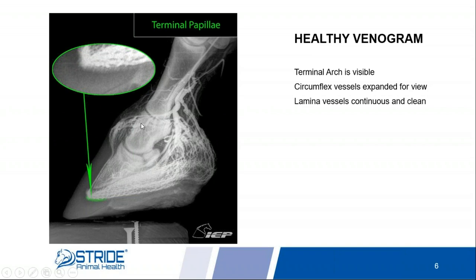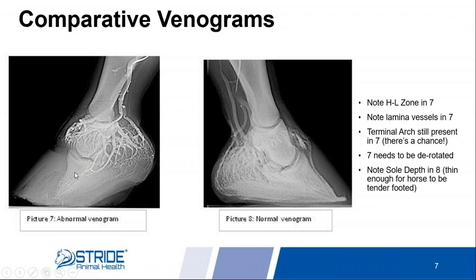Notice on this venogram the blood supply coming down here — those are the vessels which bring blood to your lamina. In the next slide, I'll show you one with laminitis, where that blood supply has basically disappeared, as in this case on the left. This is obviously a foundered horse with laminitis. The blood supply on the front of the coffin bone is absent — it's gone. And if you look at the horn laminar ratio, you can see a tremendous difference in measurement from top to bottom, showing the coffin bone has rotated down.